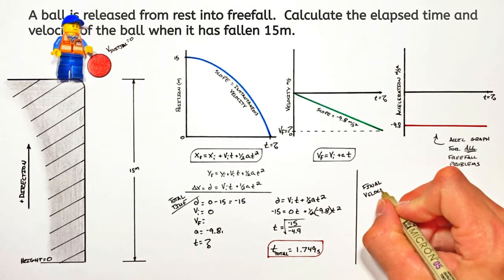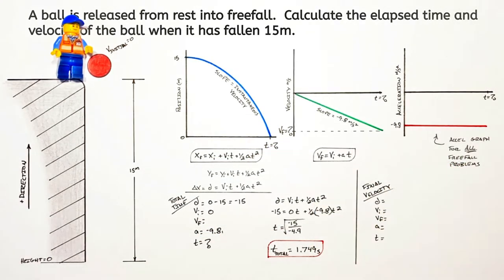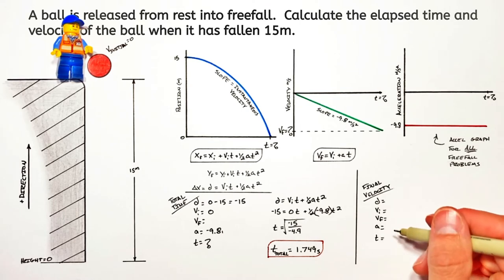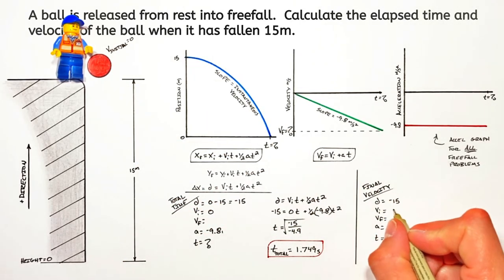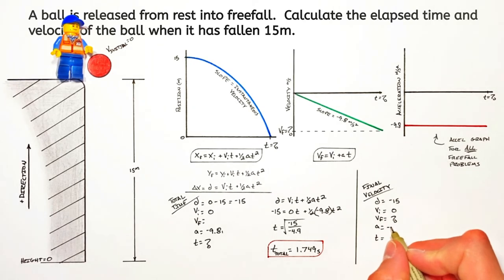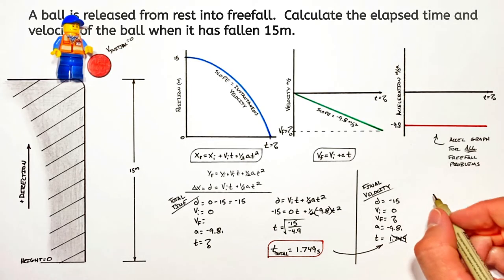Now moving on to the final velocity of the ball as it falls. The ball is still going to fall downward 15 meters, and it's still starting at rest. We're looking for the final velocity, and acceleration is still negative 9.8. Now kids, I know it's tempting to just plug this time in from the first part of the problem and use that in solving for the final velocity. But the catch is, if you get the time wrong, you're also going to get the final velocity wrong.